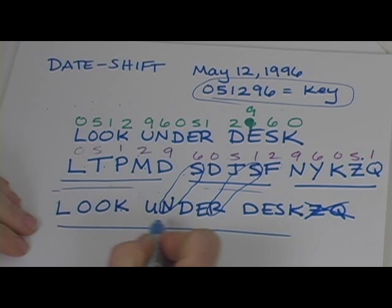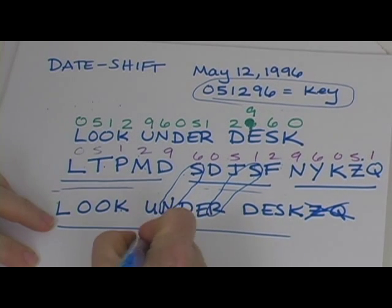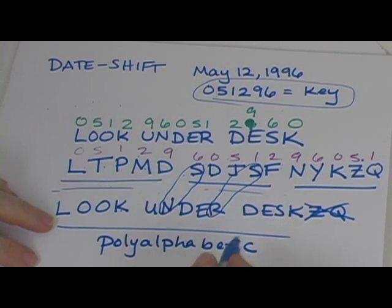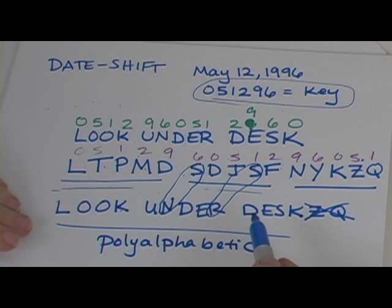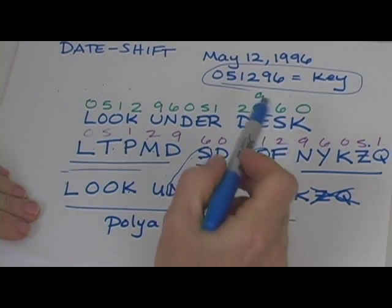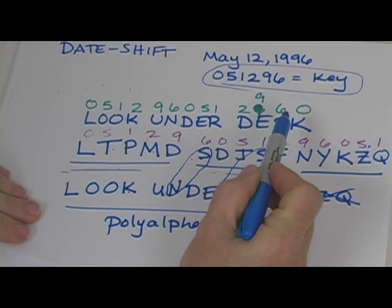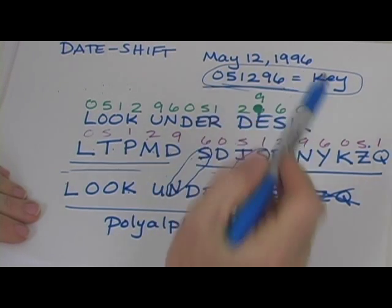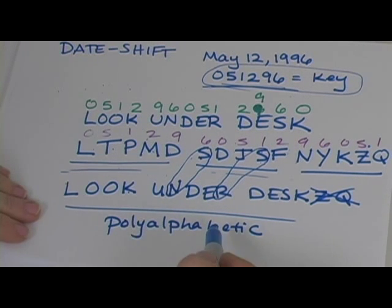So this cipher is actually called poly-alphabetic, more than one, one letter can mean more than one letter in this case. Now, you don't have to use the date to provide a key number. Any number will do so you can figure out any key you want. Just make sure you do give the key to the person that you do want to decode your message.